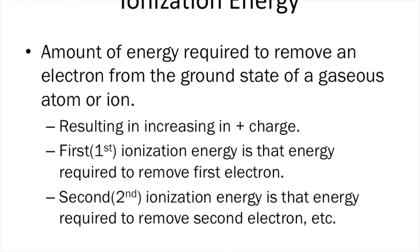Ionization energy is another periodic trend. Basically, it's the amount of energy required to remove the outermost electron from the atom. You can have first, second, third ionization energy and so on. The first ionization energy is the energy required to remove the first electron, the second ionization energy is the energy required to remove the second electron, and it continues on.